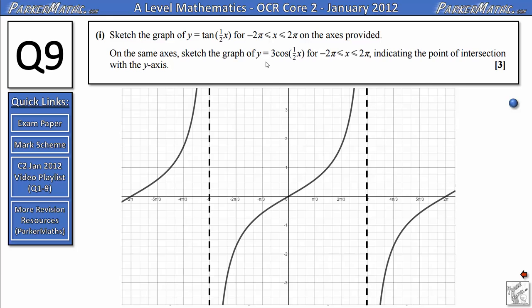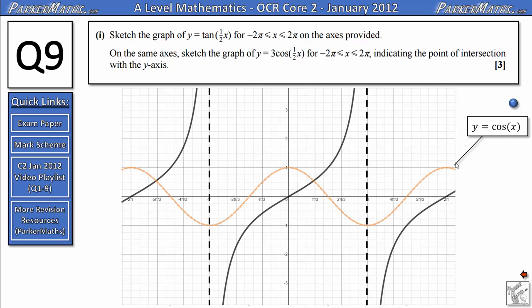Next, we'll think about the graph of y = 3cos(x/2). We'll start just by looking at the shape of cos(x), which you should know. It goes through (0, 1) and repeats every 2π. Now we'll think about how this graph will transform the standard cos(x) graph. It's been multiplied by 3.